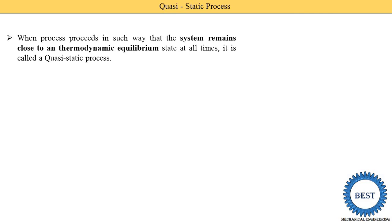I already uploaded a video on thermodynamic equilibrium and the link is provided at the top right of your screen via the eye symbol. Thermal equilibrium means temperature inside the system remains constant at all states. Mechanical equilibrium means force is the same at all states of the system, and chemical equilibrium means there are no chemical reactions changing over time. When the system is in thermodynamic equilibrium state at all times, it is called the quasi-static process.